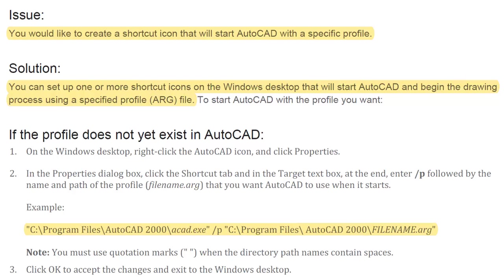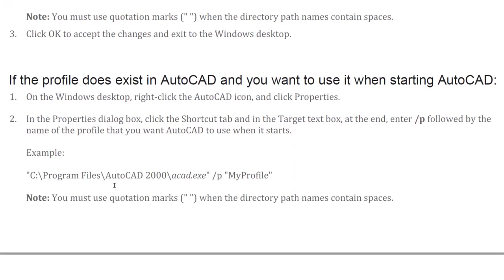After the "-P", we put in the name of our ARG or profile. If a profile does not already exist in Civil 3D, we need to put the entire path of the ARG along with its name. If the profile already exists in Civil 3D — visible when you open Options — or you don't want to automatically load it if it doesn't exist, then you simply put "-P" and the profile name.